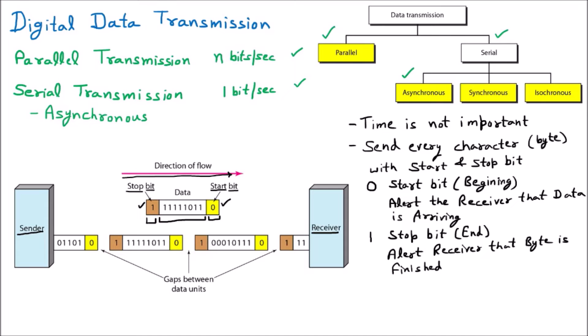In the diagram, we can see each field: this is the data, this is the start bit, and this is the stop bit (also called the end bit). Similarly, the next unit also has its data, start bit, and stop bit. I am representing the stop bit as 'end bit' to avoid confusion since both start with 'S'. Afterward, again some data arrives with a start bit, data, and a stop bit.